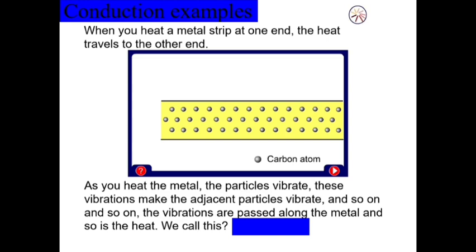Another example: when you heat a metal strip at one end, the heat travels to the other end. As you heat the metal, the particles vibrate. This vibration makes the adjacent particles vibrate, and so on. The vibrations are passed along the metal, and so is the heat. We call this conduction.